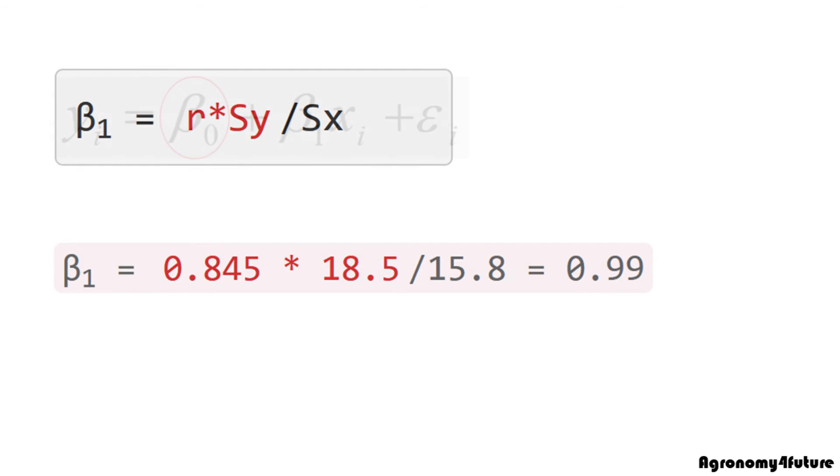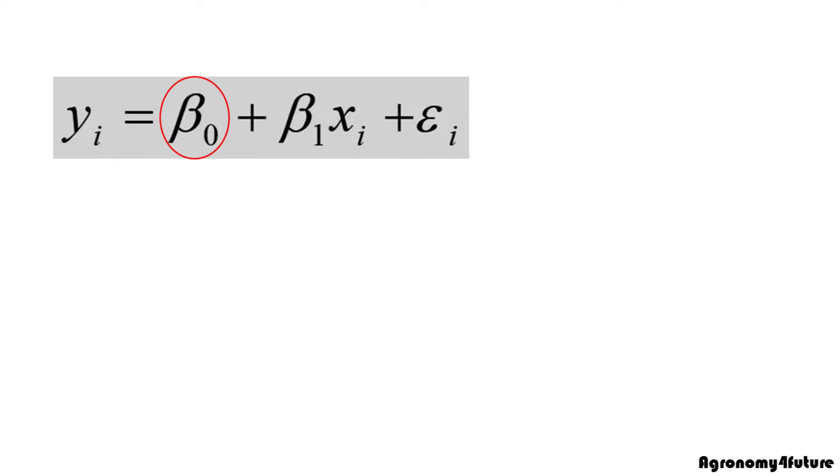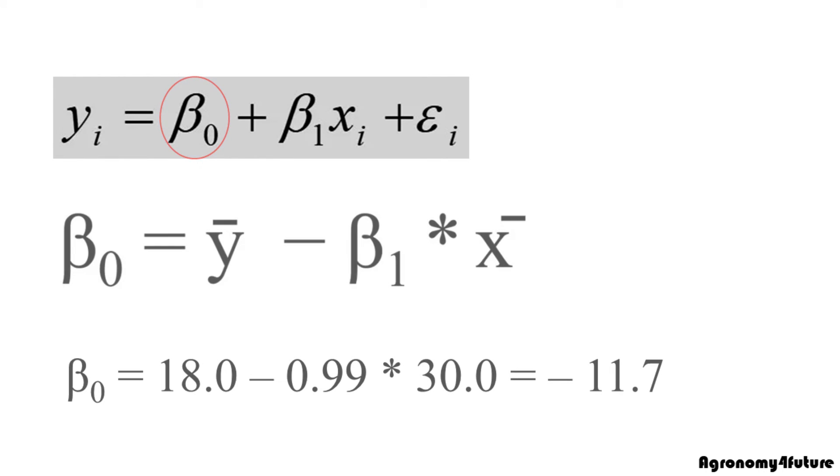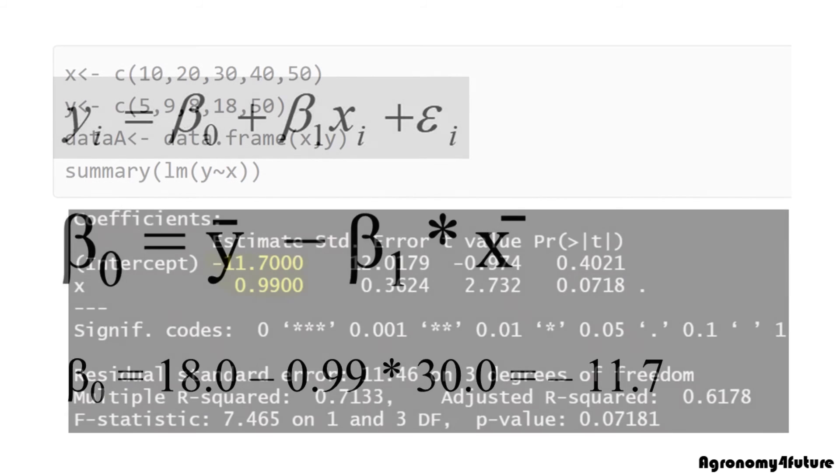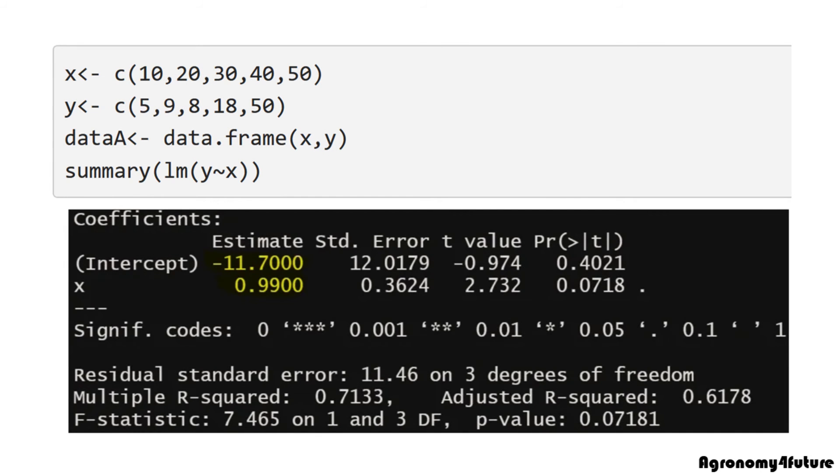Then, we can also calculate intercept beta 0. This equation would be modified this because we know the mean of x and y. Therefore, beta 0 will be minus 11.7. Let's verify our calculation is correct. It's the same.